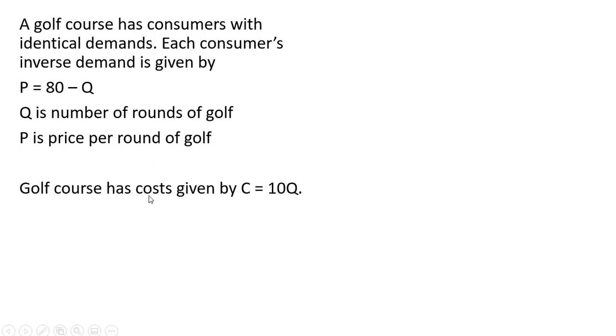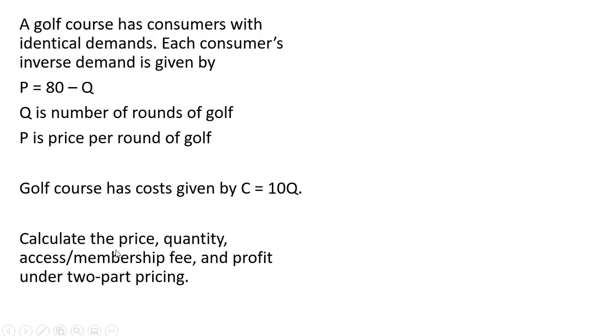The golf course has cost given by C equals 10Q, so total cost equals 10Q, or again Q equals the number of rounds of golf. And we want to calculate the price, quantity, access or membership fee, and profit under two-part pricing.